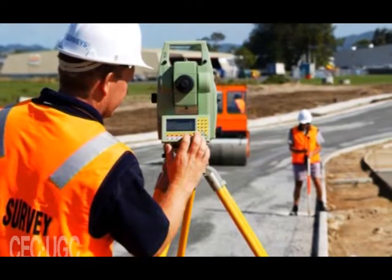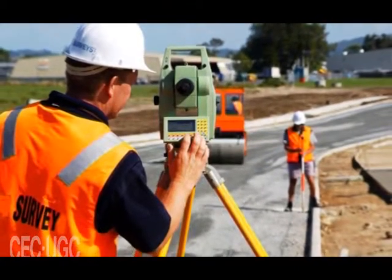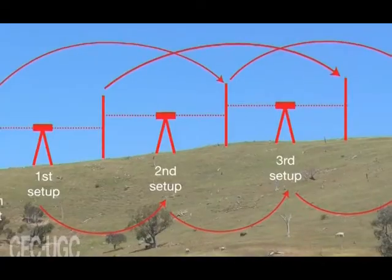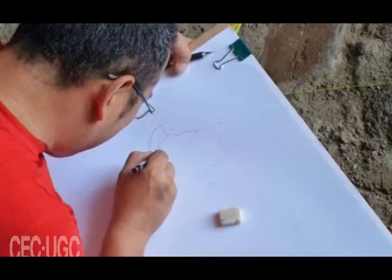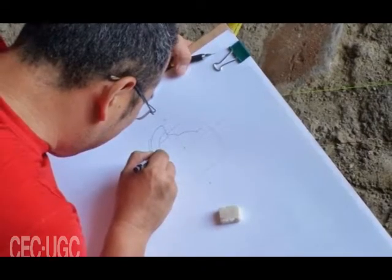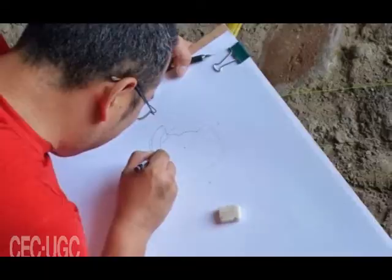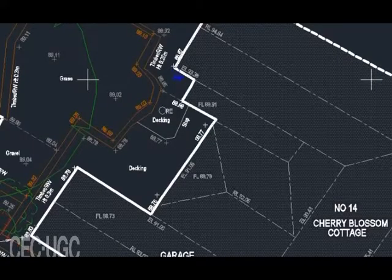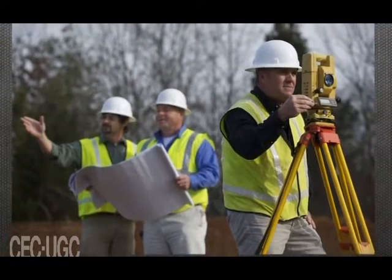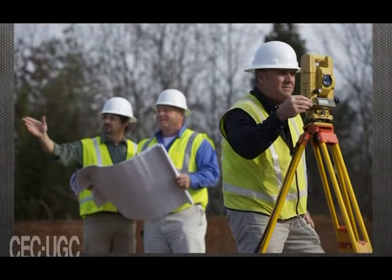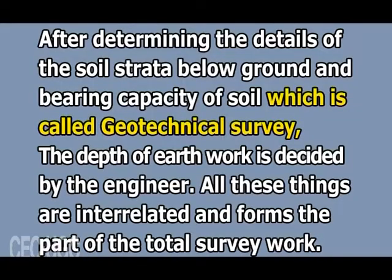After performing the measurements of the shape, size and location of objects on ground, the details are plotted on a drawing sheet. After the completion of drawing, which may be one or more than one describing the details, the construction process is started.